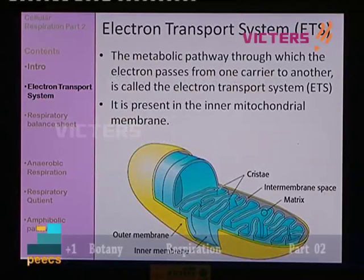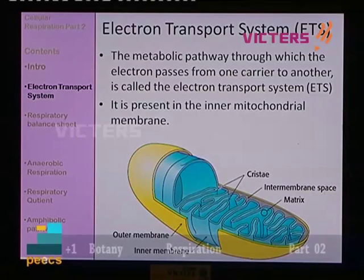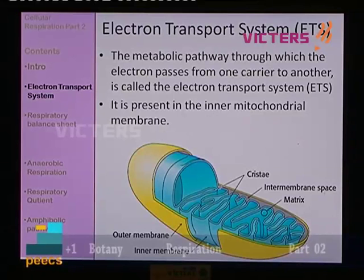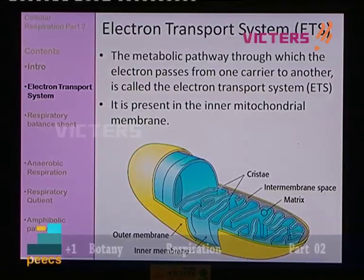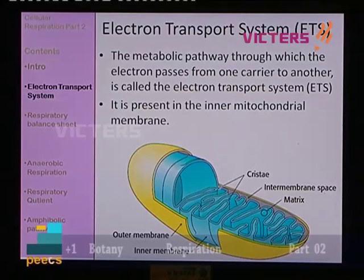What is the electron transport system, or ETS? It involves in the mitochondrial membrane the metabolic pathway through which the electron passes from one carrier to another. It is known as the electron transport system — that is, the metabolic pathway through which the electron passes from one carrier to another. It is present in the inner mitochondrial membrane.